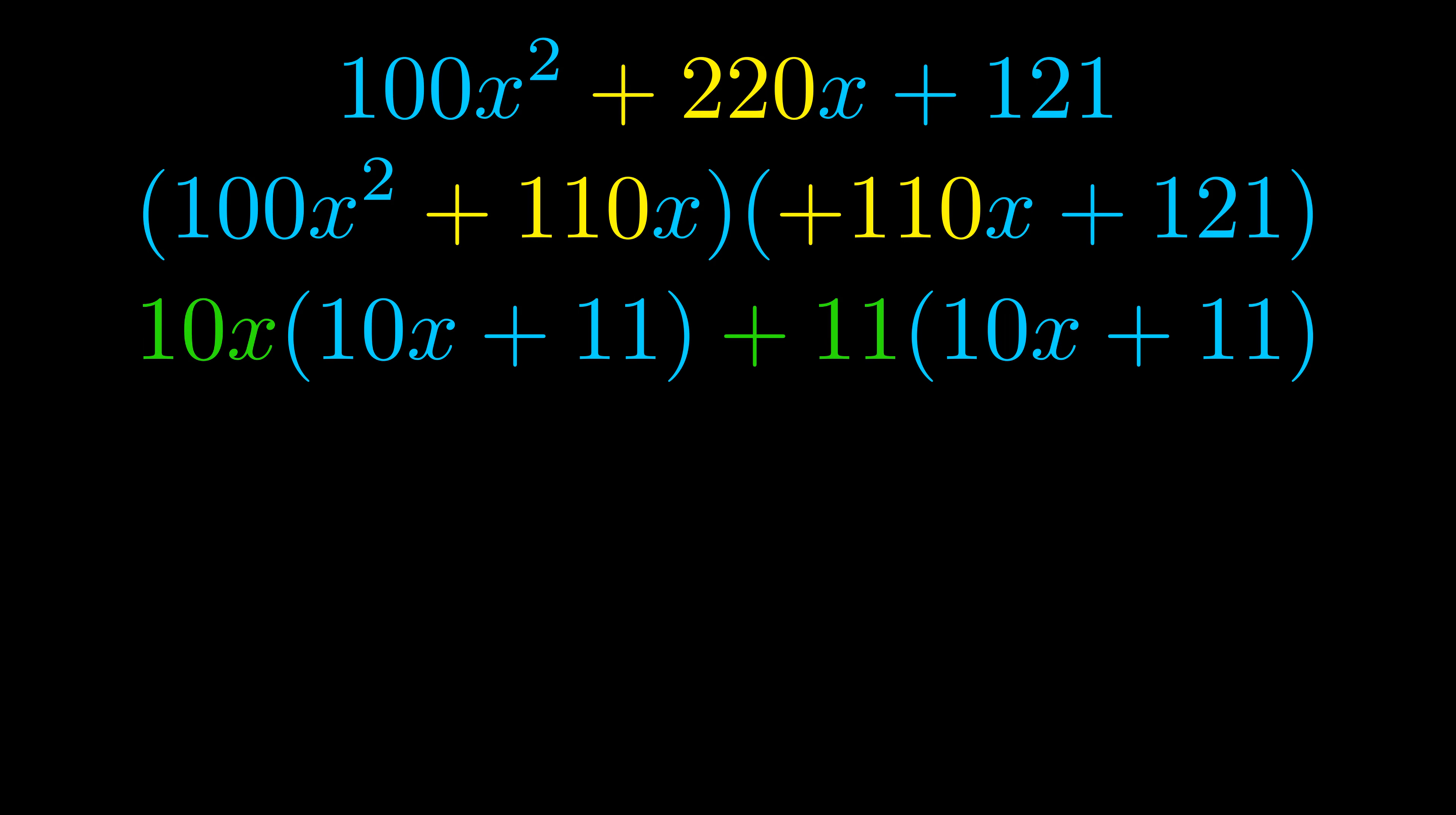Notice also how what remains inside of the parentheses is the same in both cases. The blue values are the same. Those blue values will become one of our factors and we will combine the two green values, the GCFs that we pulled out, to get the other one.